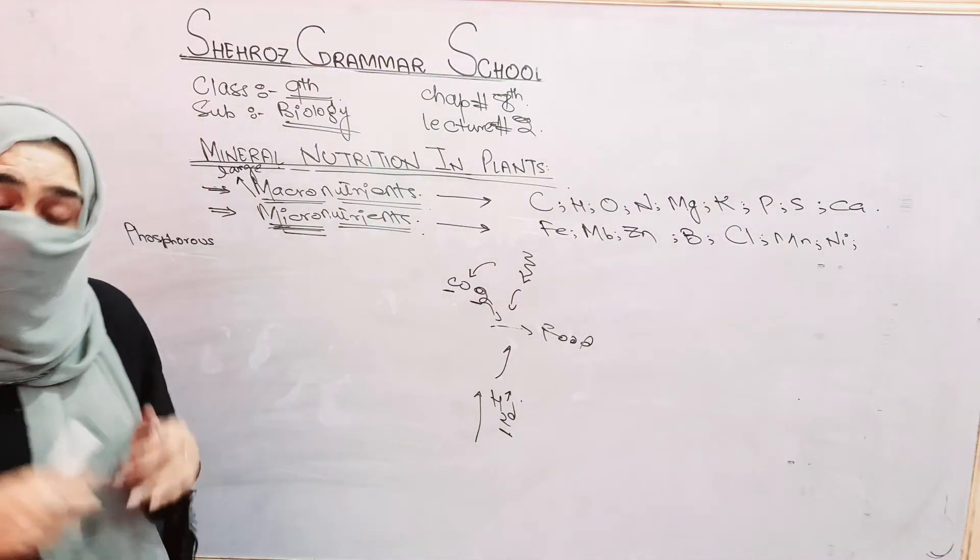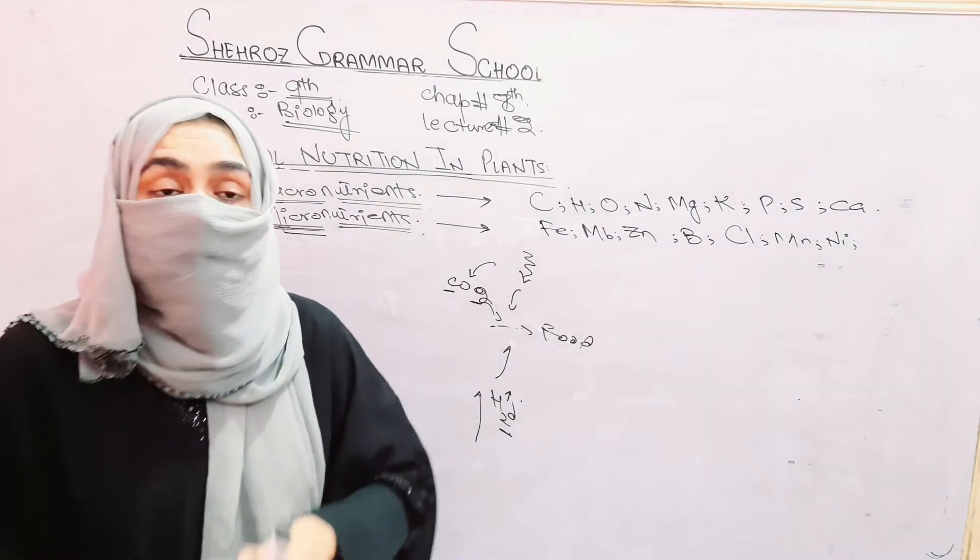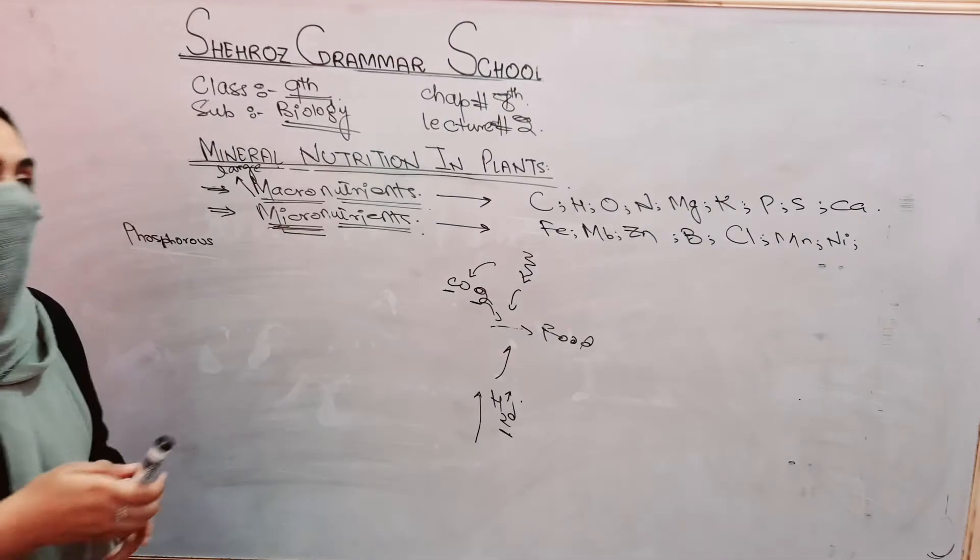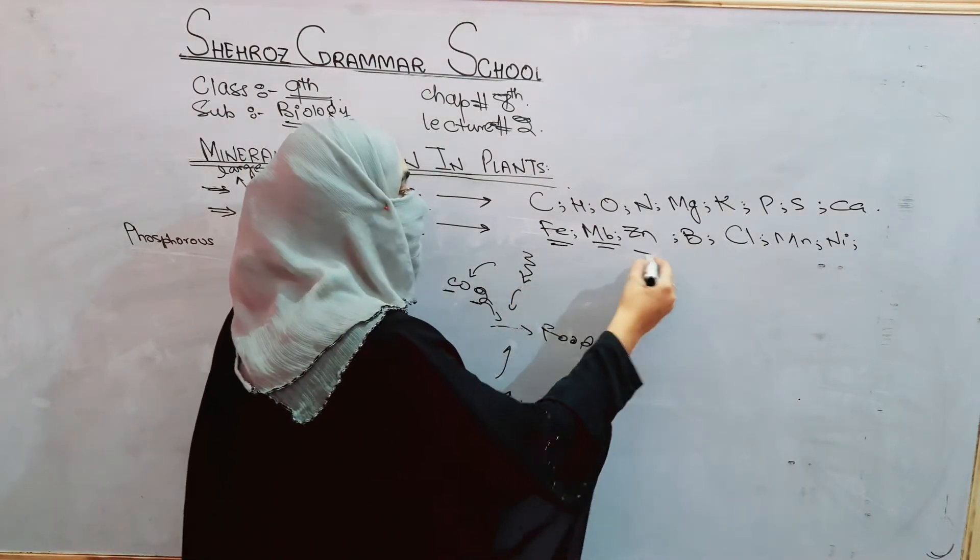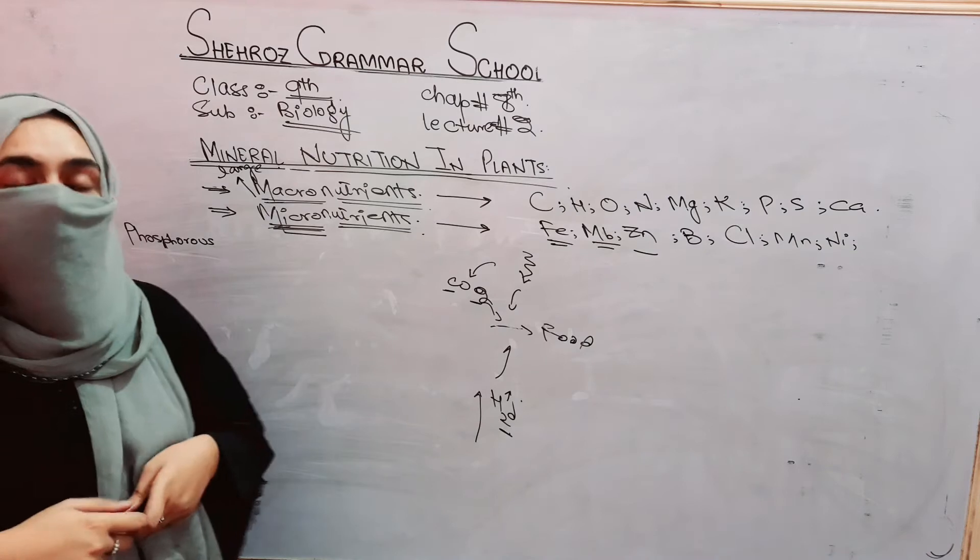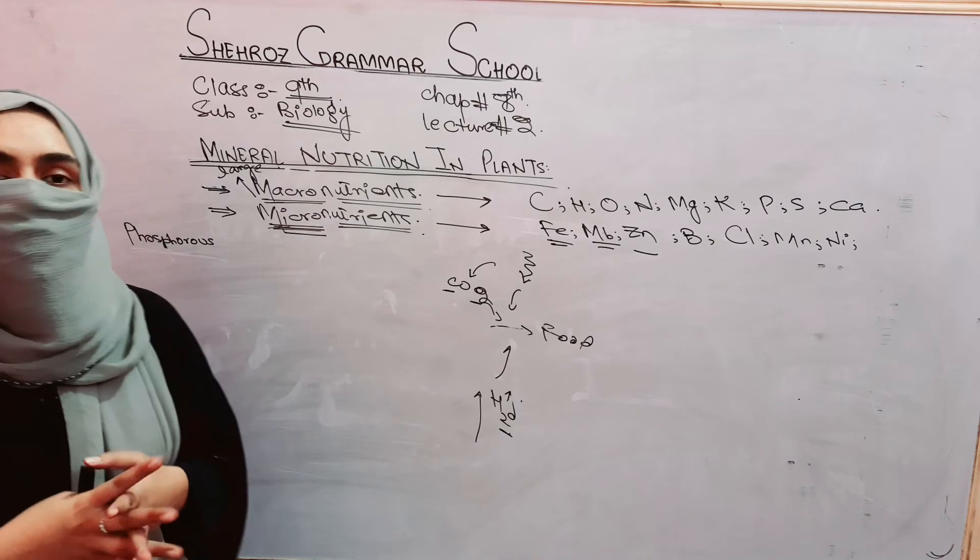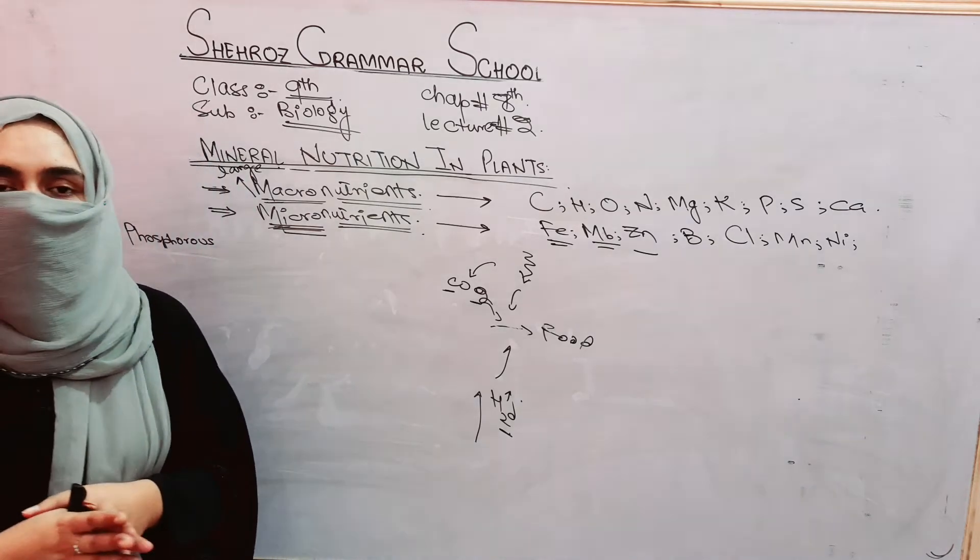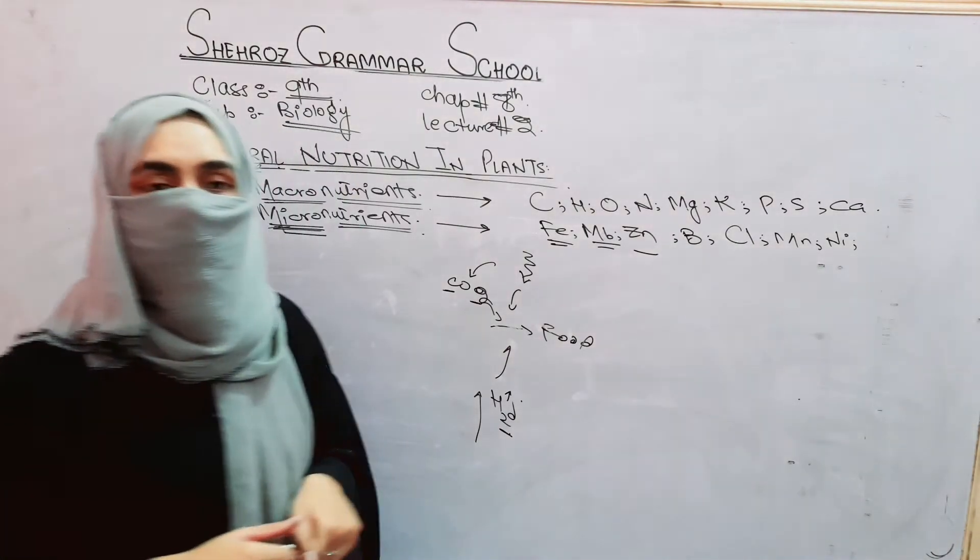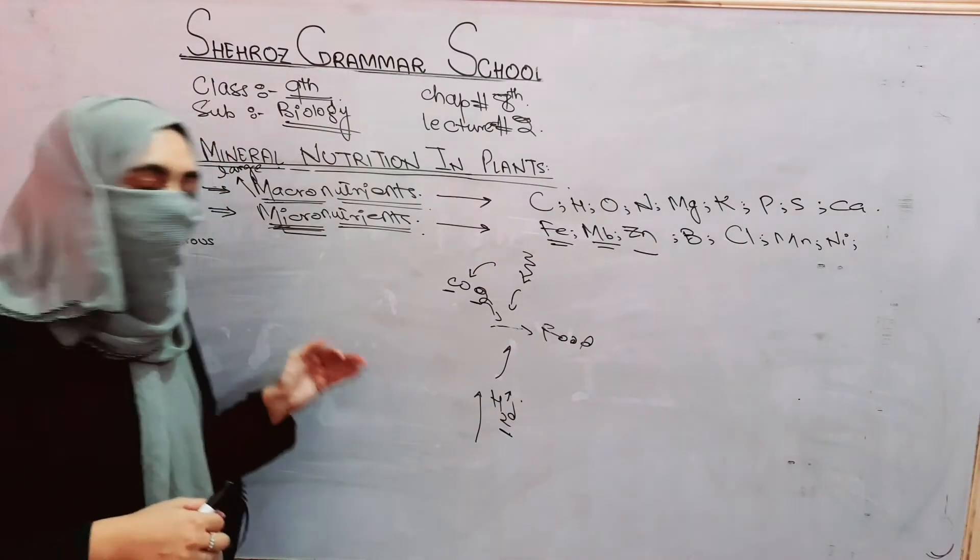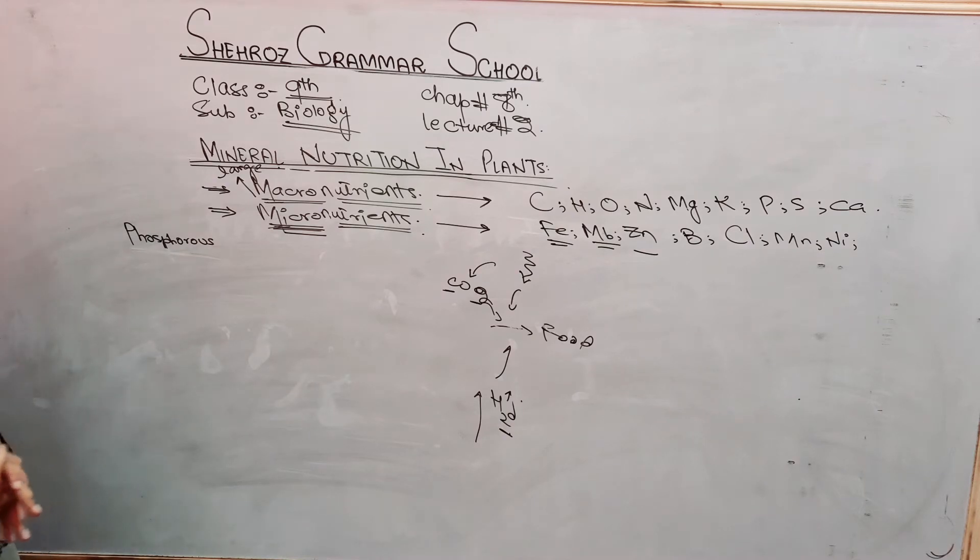There are some nutrients that are needed in small quantity. If their deficiency occurs, then it will affect plant function. They are necessary but needed in less amount. We call them micronutrients, such as iron, molybdenum, zinc, boron, chlorine, manganese, and nickel. These micronutrients are needed by plants in less quantity, but they are definitely needed. If there is deficiency, then without them plant processes cannot run.